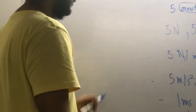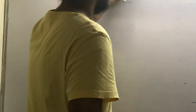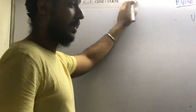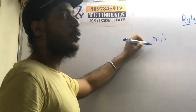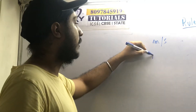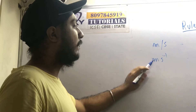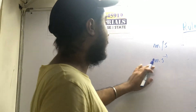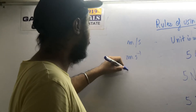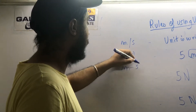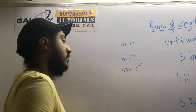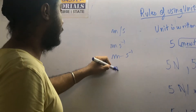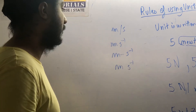The last rule is that whenever the unit is a multiplication of two units, like meter per second, if you want to show it in multiplication form, you write it as meter second inverse. If there is a multiplication, always keep a space between them — you can write it like meter (with a bar) second inverse, or just with a space.